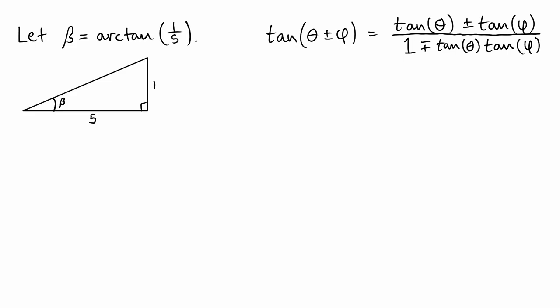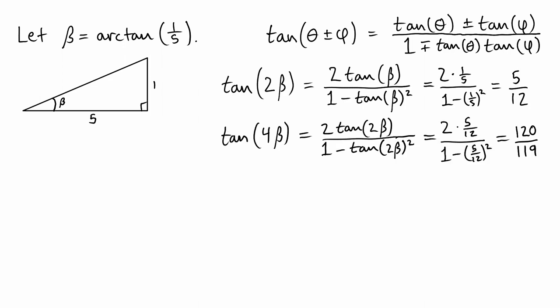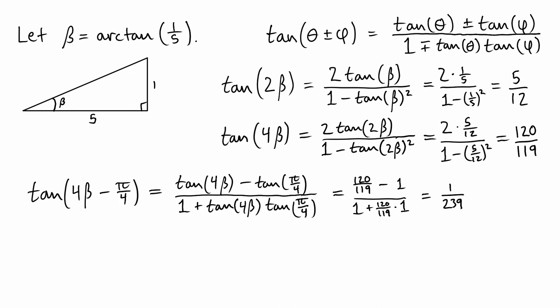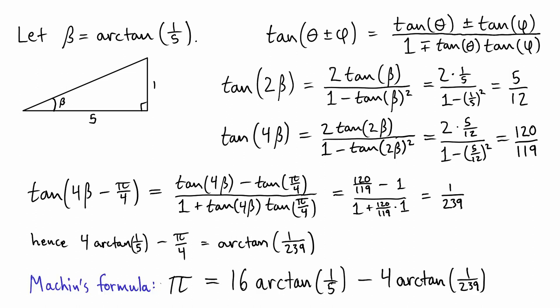Let beta be arctan of 1 fifth. Then we can calculate the tangent of 2 beta and the tangent of 4 beta. With these, we can calculate the tangent of the difference of 4 beta and Pi over 4. Hence, by taking the arctan of both sides of this formula, we obtain the Machin formula for Pi.